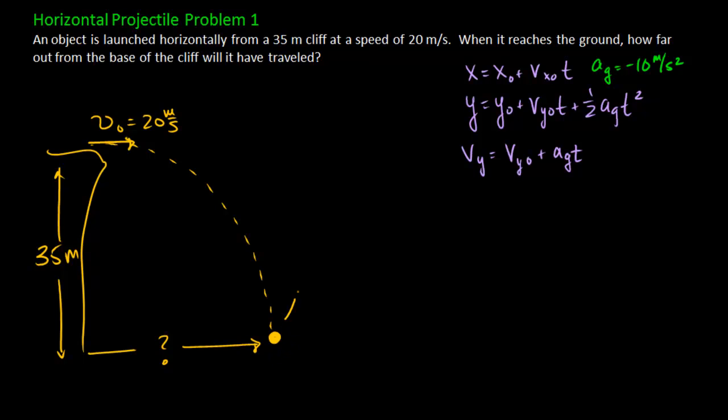If we assume like we have in the past that our starting position is y equals zero, and we also assume that up is positive and to the right is positive, our y is not 35, but this tells us that our y is going to be negative 35, because this is going to end 35 meters below where it started. We can also see that the thing we're looking for in this problem is x. We're looking for the position in the x direction that this projectile hits the ground at.